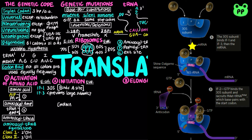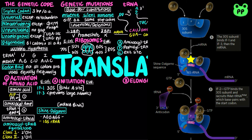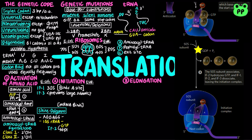Then the mRNA binds the 30S subunit. Within the mature mRNA, a special sequence known as the Shine-Dalgarno sequence (AGGAGG) base pairs with 16S ribosomal RNA within the 30S subunit and guides the initiating AUG codon to the correct position at the P site. Next, GTP-bound IF2 binds to the 30S subunit and recruits formyl-methionine tRNA. The anticodon of formyl-methionine tRNA base pairs with the start codon of mRNA. GTP bound to IF2 is hydrolyzed, triggering IF1, IF2, and IF3 to dissociate. The 50S subunit associates, forming the complete 70S ribosome and the initiation complex containing both the mRNA and the formyl-methionine tRNA.